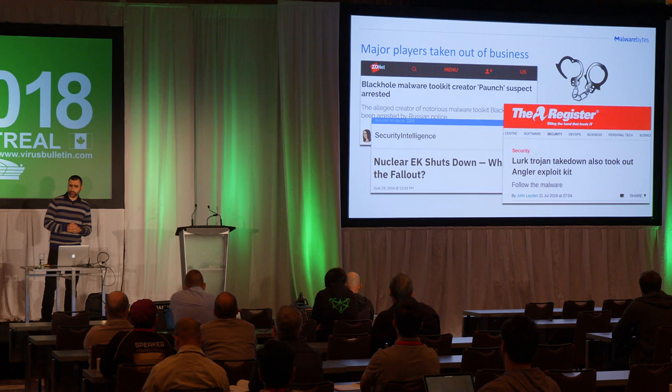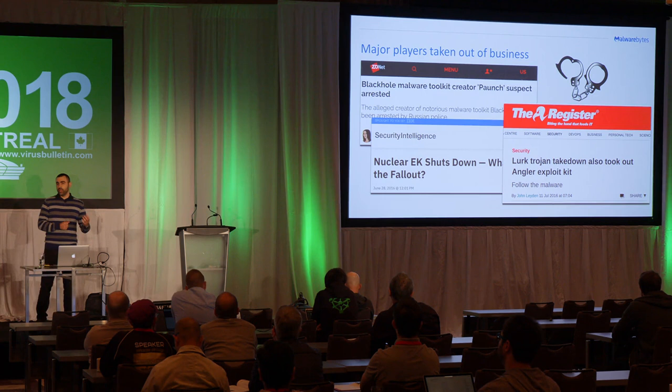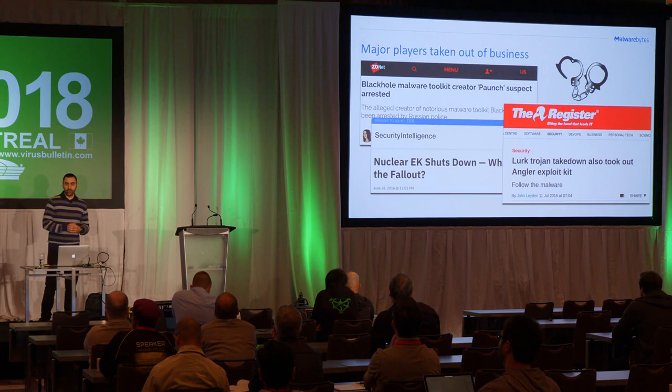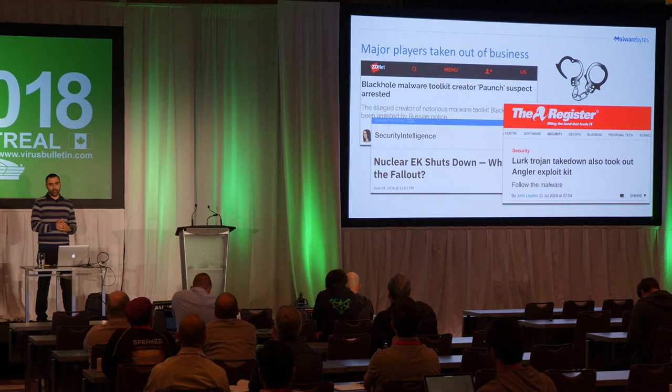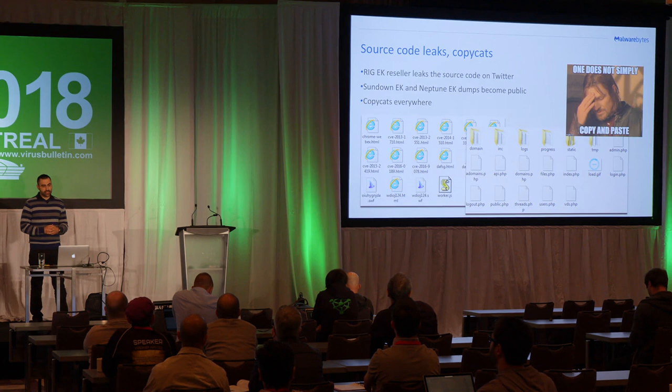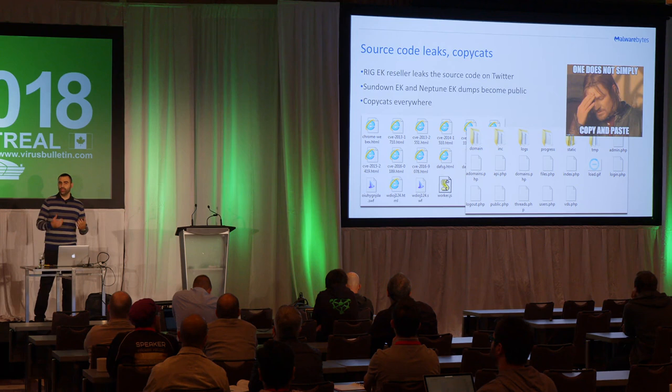At the same time, there have been some major players that have been taken out. For example, the Blackhole creator was arrested. The Nuclear exploit kit vanished after security researchers exposed it. And more recently in 2016, the Angler exploit kit, which was dominant, just disappeared in June. That really created a void — nobody came up to take advantage of it. Instead, what we saw is existing exploit kits not really innovating, just continuing to use older, stale exploits.